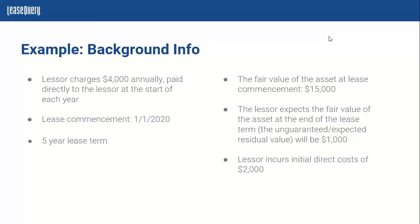At the lease commencement date, the fair value of the asset being leased is $15,000. At the end of the lease term, the lessor expects that the fair value of the asset they'll receive back — the unguaranteed or expected residual value — is estimated to be $1,000. Additionally, the lessor has incurred initial direct costs of $2,000. We'll use that $2,000 as our initial direct cost amount across all the standards when applying this example.